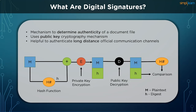In many instances, digital signatures provide a layer of validation and security to messages sent through a non-secured channel. Properly implemented, a digital signature gives the receiver reason to believe that the message was sent by the claimed sender. Digital signatures are equivalent to traditional handwritten signatures in many respects, but properly implemented digital signatures are far more difficult to forge than the handwritten type. Digital signature schemes are cryptographically based and must be implemented properly to be effective. They can also provide non-repudiation, meaning the signer cannot successfully claim they did not sign a message while also claiming their private key remains secret. Furthermore, some non-repudiation schemes offer a timestamp for the digital signature, so that even if the private key is exposed, the signature is valid.